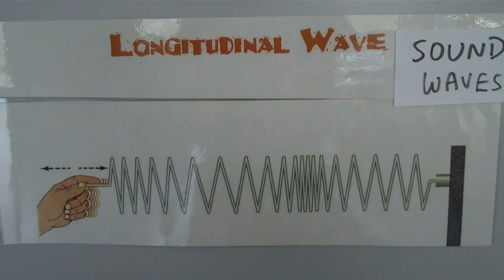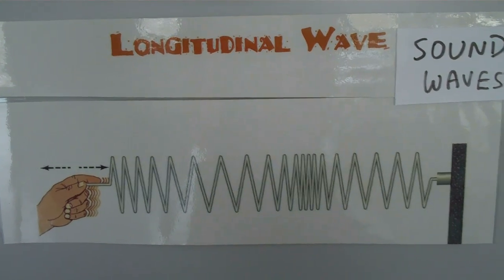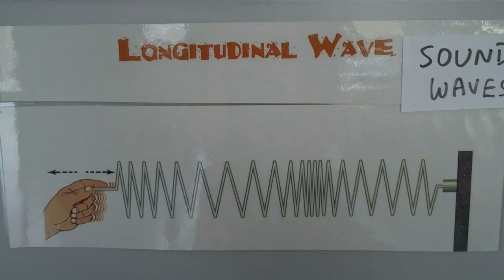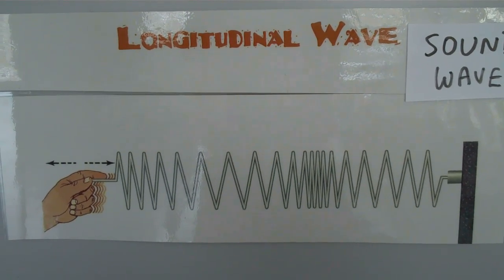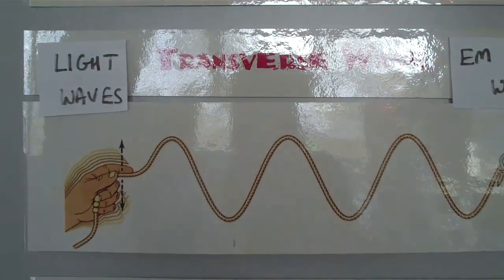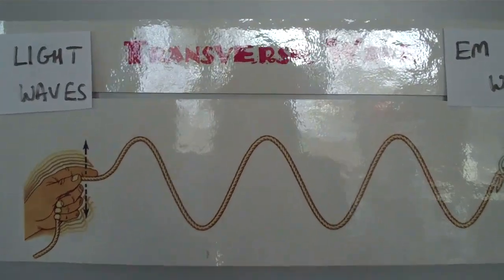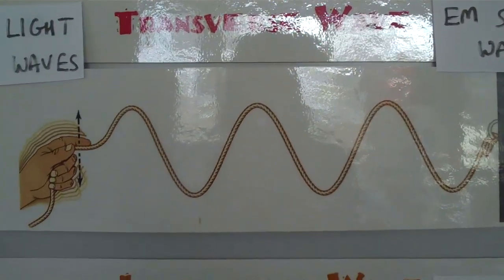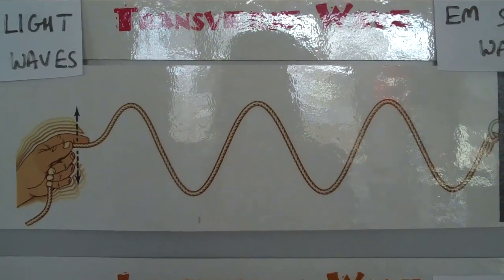Just to review, sound is a longitudinal wave. When we use the slinky we push the slinky back and forth, whereas light is a transverse wave. When we've used the slinky we move the slinky from side to side.